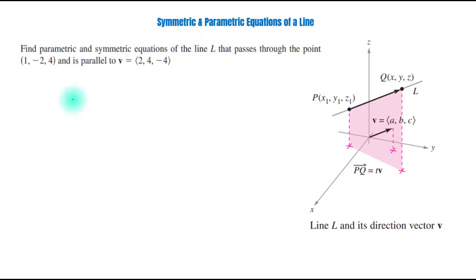Let us solve some example problems. Find parametric and symmetric equations of the line L that passes through the point (1, -2, 4) and is parallel to vector v equals (2, 4, -4). This is equivalent to x1, y1, z1, and this is equivalent to a, b, and c.